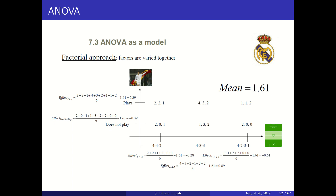Let's say that you are the coach of Real Madrid and you have three factors to handle: the strategy — different positions in the field — so you can have 4-4-2, 4-3-3, or 4-2-3-1 — and then a player that could play or not. You annotate how many goals you score in every match. For every combination you play three matches.